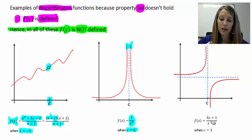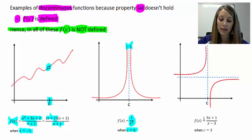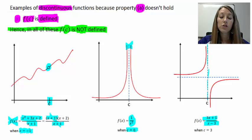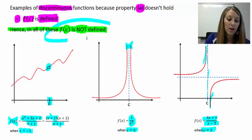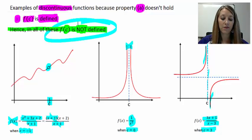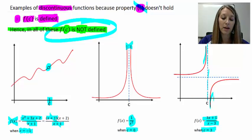In example three, this is again a rational function defined as a fraction. Whenever the denominator equals zero, that creates a vertical asymptote, so the graph has to jump from the left-hand side to the right-hand side. A vertical asymptote at three tells us the function is not defined there. These are three examples of graphs that are discontinuous because of property A.